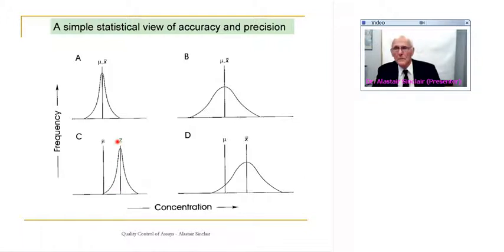And over here we have the worst situation - a wide dispersion of data, therefore very imprecise, and on average significantly removed from the true value, so we have bias. So the best situation here and the worst situation here - we need to appreciate those.